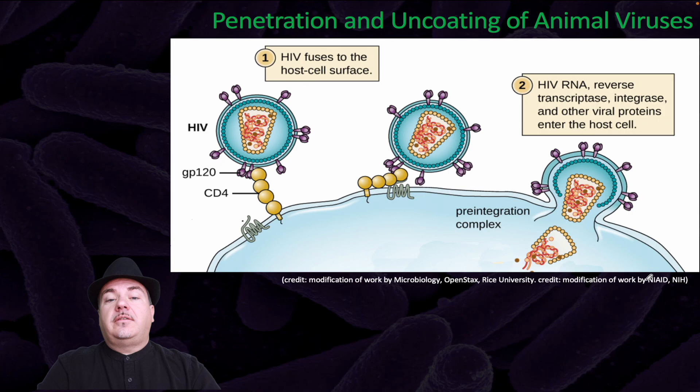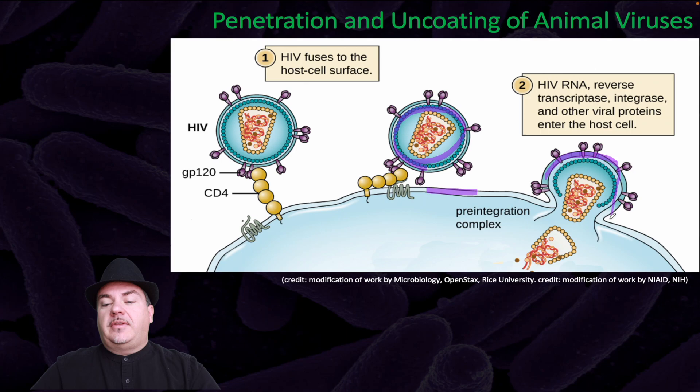With the HIV virus, it's not brought in by endocytosis. Instead, after it adsorbs, the membrane of the virus fuses with the plasma membrane, so the membrane of the virus becomes part of the plasma membrane of the host cell, and in doing so the contents are then released into the cell.